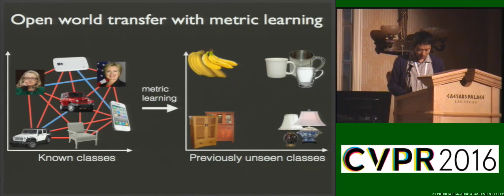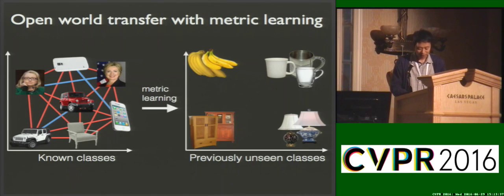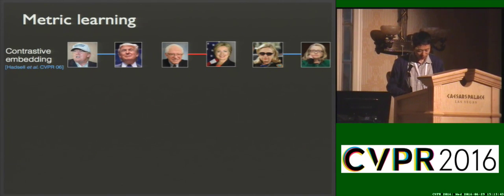After learning the metric from the labeled data, we can apply it to examples from previously unseen classes for retrieval and clustering, in contrast to supervised classification where the training and testing classes should be the same. To this extent, there has been a large body of literature in transfer learning and metric learning.